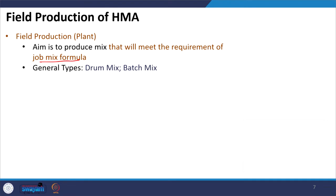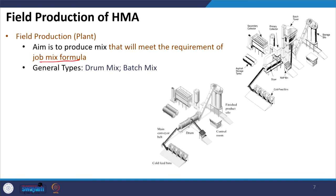There are generally two types of plants for producing hot mix asphalt: the drum mix plant and the batch mix plant. In the drum mix plant the ingredients are added, dried, and mixed in a single drum. In the batch mix plant the ingredients are pre-weighed and added in a separate pug mill to mix the aggregate particles of different sizes with the bitumen.